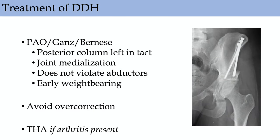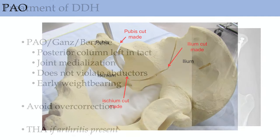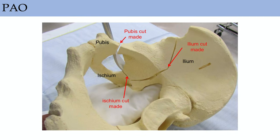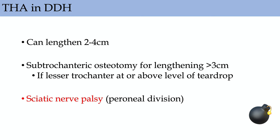Treatment of DDH: early on you can do a PAO or Ganz/Bernese osteotomy. The advantages are that the joint medializes, you leave the posterior column intact, you make three separate cuts in the ilium, ischium, and pubis, and it allows for early weight bearing — just avoid overcorrection. For high-riding hips, if the femoral head is above the lesser trochanter preoperatively, you'll typically need a subtrochanteric osteotomy to shorten the femur so you're not stretching the sciatic nerve — specifically the peroneal division — during arthroplasty. This is fixed after THA with the removed bone and cables.